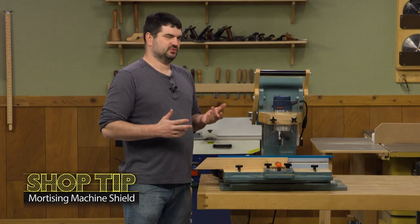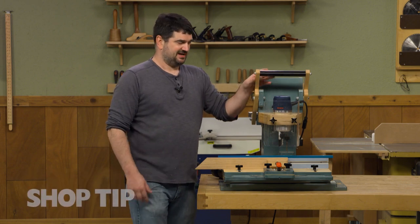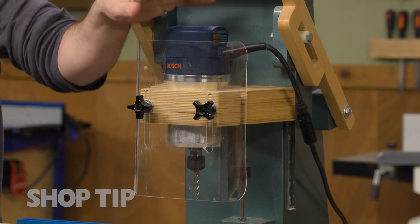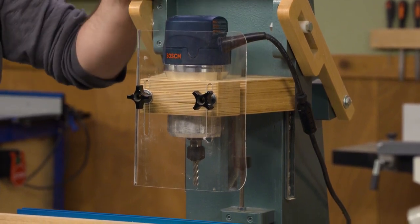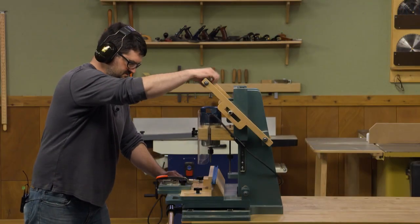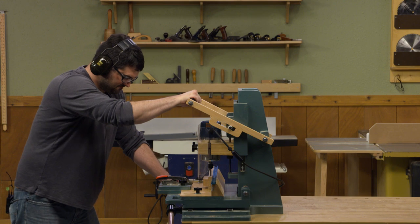One of my favorite shop-built tools that we've made in the magazine is this router mortising machine. I like it because it takes your router motor that you might already have and converts it into a mortising machine just by using some three-quarter inch plywood and some standard hardware like drawer slides and stops.